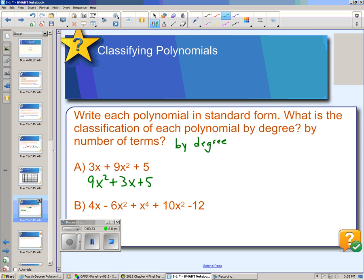Now classifying this by degree, since the highest exponent is 2, this is second degree. And second degree polynomials are called quadratics. This should look familiar from the last chapter. If we're going to classify this by number of terms, we can see that there are three terms, the three different monomials added together, so that would make this a trinomial. This should also be a little bit of review from the last chapter.